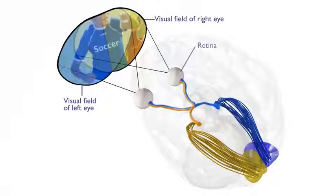After leaving the retina, information travels to various brain regions, including the superior colliculi in the brainstem and to the thalamus.